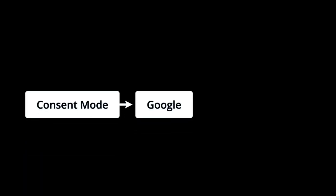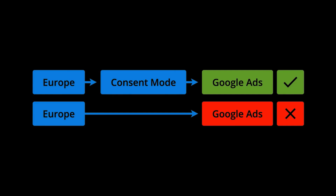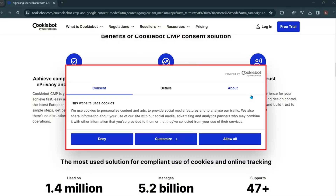Overall, consent mode lets you tell Google if someone has provided consent when they visit your website. For example, if you want to create a Google Ads remarketing campaign that targets people located in Europe, you will need to implement consent mode. If you don't, data collected from people based in Europe won't be available in your Google Ads account for remarketing. Consent mode works with the consent banner on your website. If you're using a consent management platform like CookieBot, it will automatically pass people's consent preferences to Google.